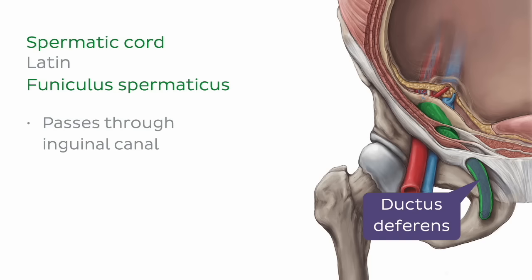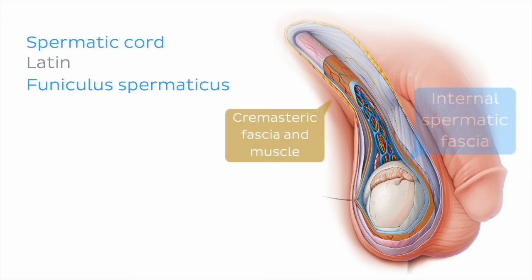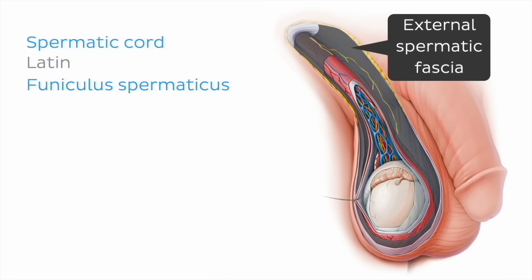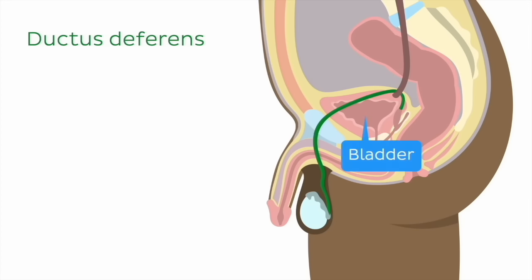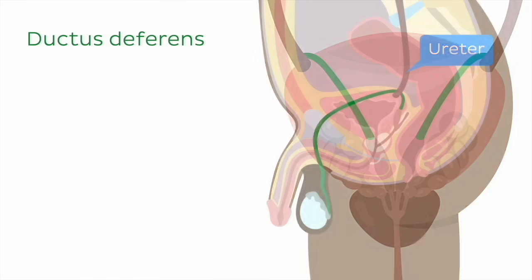The spermatic cord is surrounded by extensions of the anterior abdominal wall, which include the internal spermatic fascia, cremasteric fascia and muscle, and external spermatic fascia, which also extend over the scrotum. As the ductus deferens travels through the inguinal region and into the pelvis, it courses alongside the bladder and medial to the ureter. The final part of the ductus deferens is better examined from a posterior perspective.